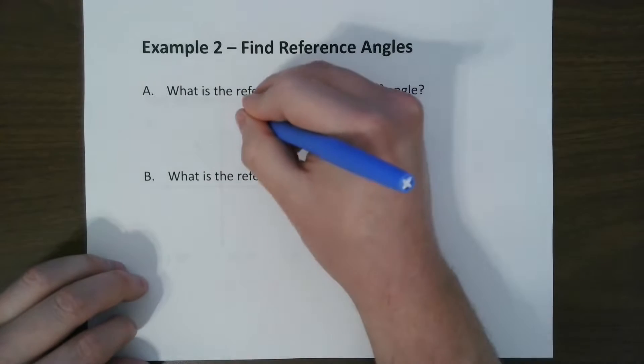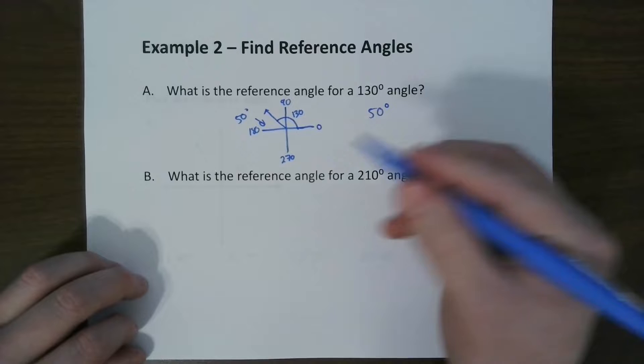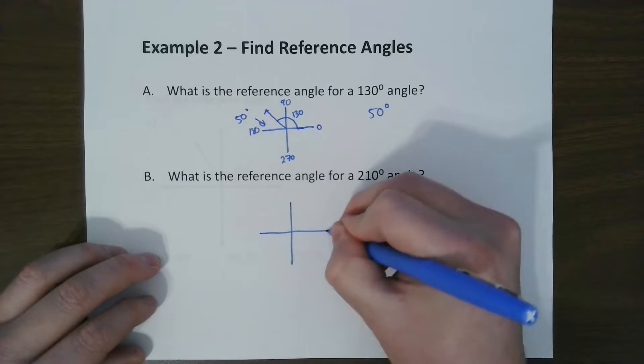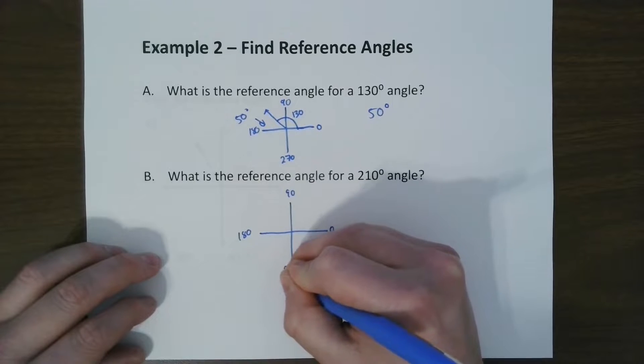So that is your reference angle, 50 degrees. In other words, we went 180 minus 130. So same story here. For 210, we got 0, 90, 180, 270.